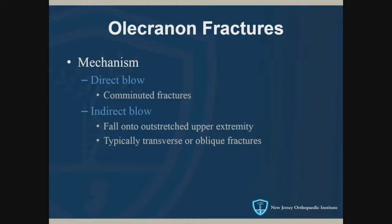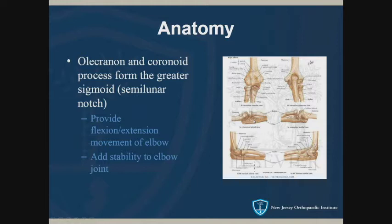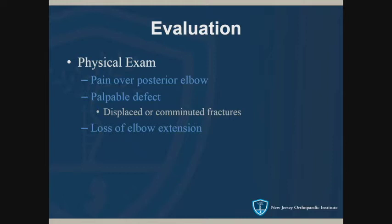Next, olecranon fractures. These happen one of two ways: either a direct blow where you fall right on your elbow, or an indirect blow where you fall and brace yourself with your wrist, causing an eccentric contraction of the triceps that avulses the olecranon. The olecranon and coronoid process form the semilunar notch, which is the articulation with the distal humerus — allowing flexion-extension and providing primary stability. On exam, the patient will have tenderness over the tip of the elbow, and you may feel a boggy defect if the fracture is displaced — instead of a sharp tip, it'll just be soft tissue.